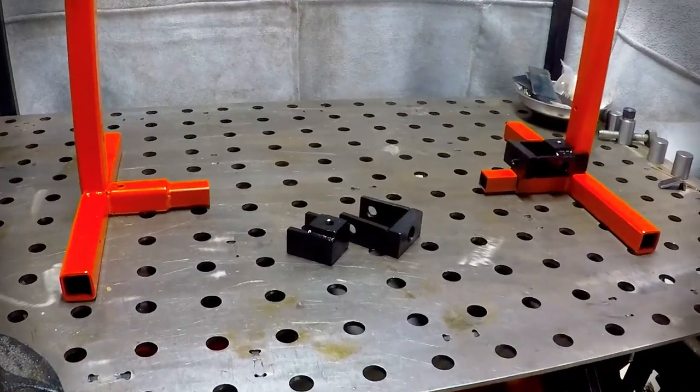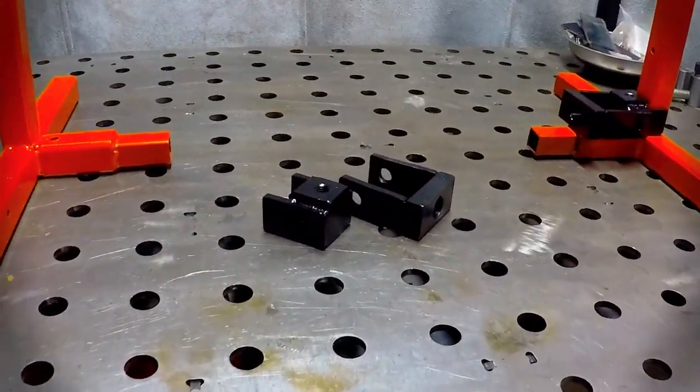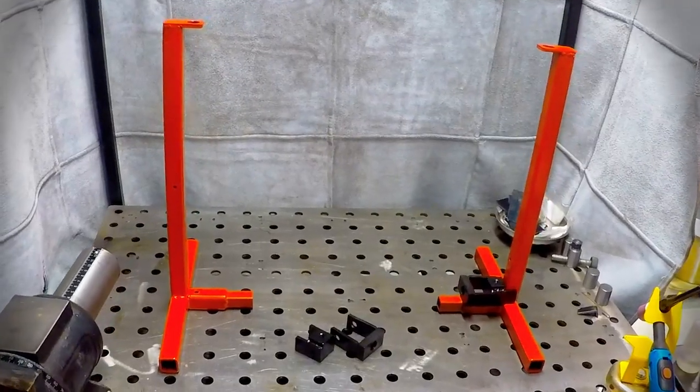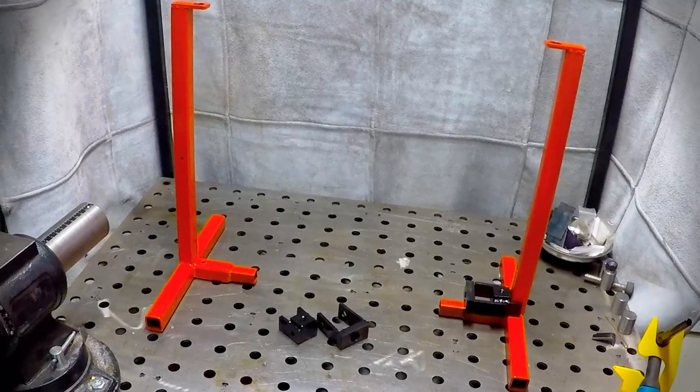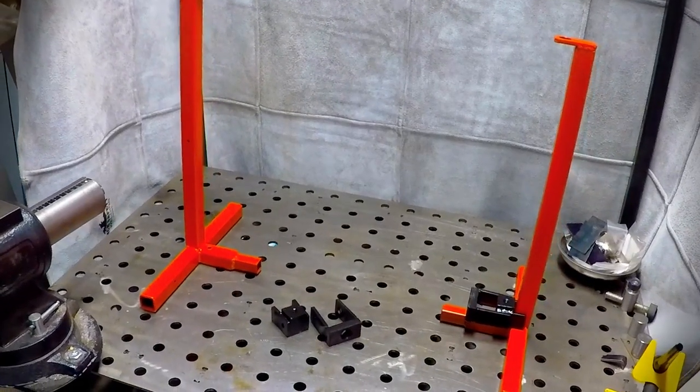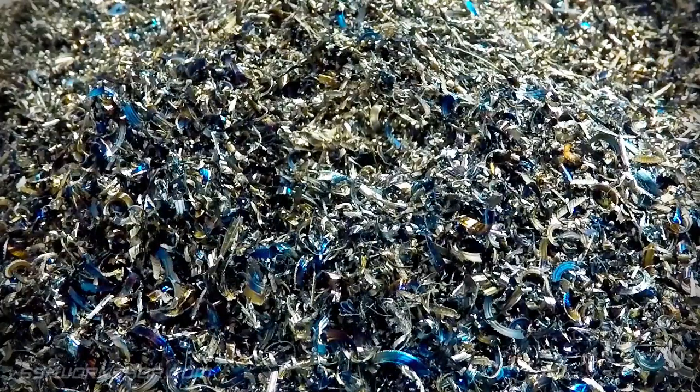In the next episode we'll add the threaded rods, handles to adjust the height, and the mountings for the locomotive. Hopefully when this is complete it will really help with the project going forward. Thanks for watching, catch you next time.